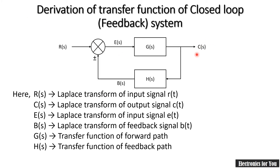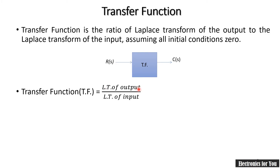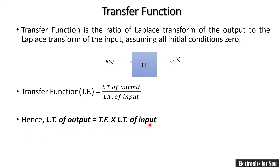Before derivation, we will see one small concept — the transfer function. I have already made videos on transfer function before this video. Transfer function is defined as the ratio of the Laplace transform of output to the Laplace transform of input, considering all initial conditions as zero. So C(S) divided by R(S) equals the transfer function, and the Laplace transform of output equals the transfer function multiplied by the Laplace transform of input.